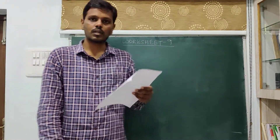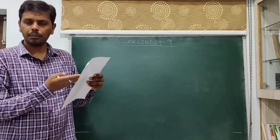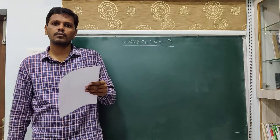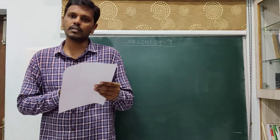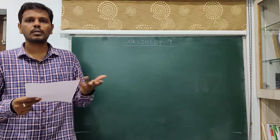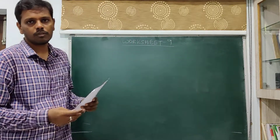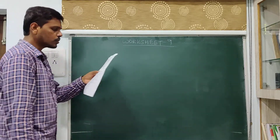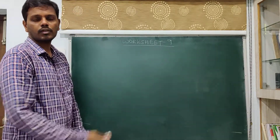The fourth problem is a general case of what we have done in the first three problems. For any prime number p, the proof follows the same argument. For example, if p equals 2 that is the first question; if p equals 3 that is the second one; if p equals 5 that is the third question. This is the most general case which I am proving.